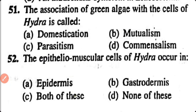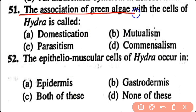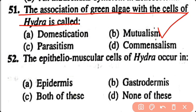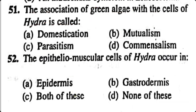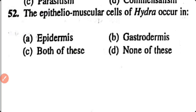Question number 51. The association of green algae with the cells of Hydra is called: domesticism, mutualism, parasitism, commensalism. Option B. The association of green algae with the cells of Hydra is mutualism, in which both partners get benefited.